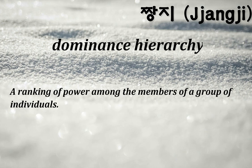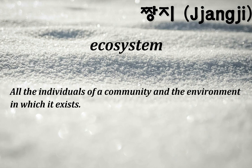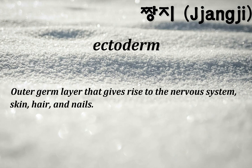Dominance hierarchy: a ranking of power among the members of a group of individuals. Double helix: the shape of DNA — two strands held together by hydrogen bonds. Ecosystem: all the individuals of a community and the environment in which it exists. Ectoderm: outer germ layer that gives rise to the nervous system, skin, hair, and nails.